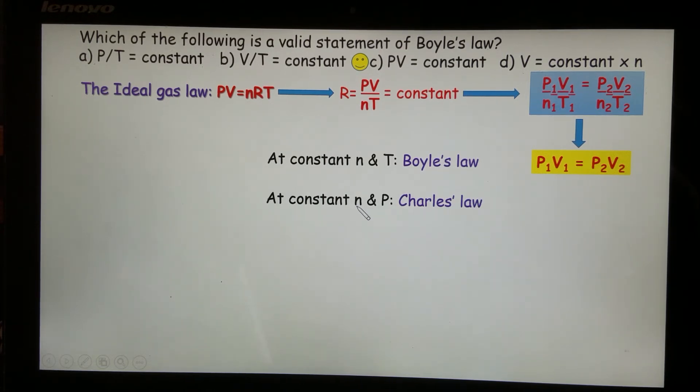Now at constant n and P, which means n1 equals n2, we can cancel the two. P1 equals P2, we can also remove the pressure. So now after P1 and n1 is gone, we have V1 over T1, and on the other side, just V2 over T2. Therefore, we have this equation, and that's Charles's law equation, under constant n and P.